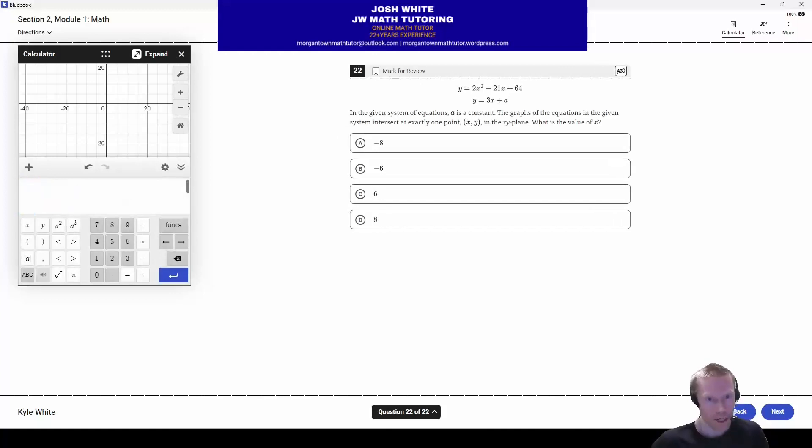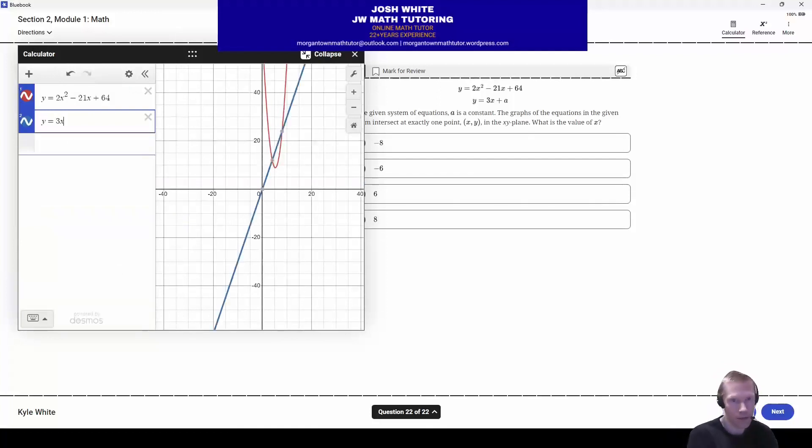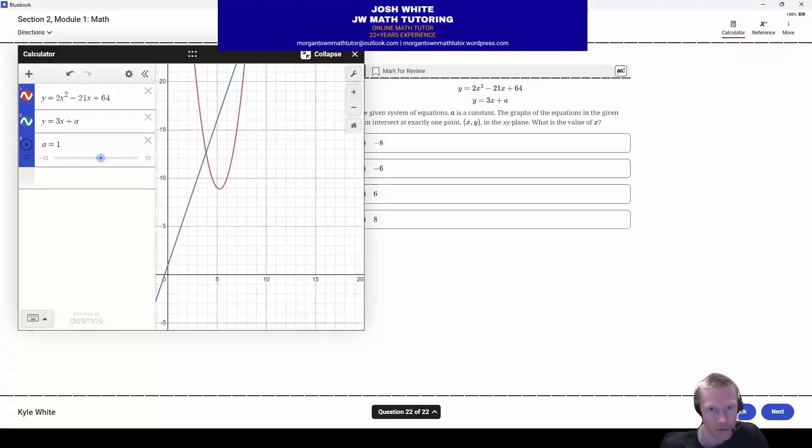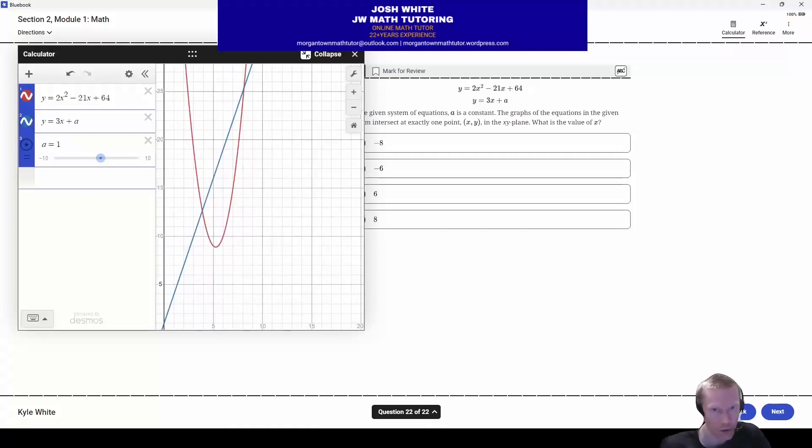So bring up the calculator. We're going to graph the first function, which is the quadratic. And then, let's expand this second one. Okay, I'm going to add a slider for A. Now, what you have to do is you basically have to fool with this until they only intersect one point. So notice here, right now, they currently intersect at two points. So notice if I increase these values, it's still two points.